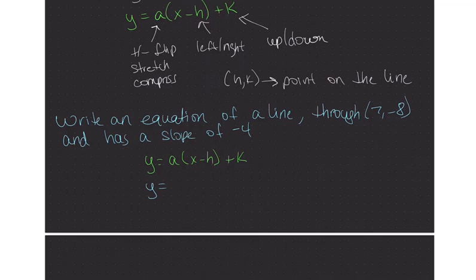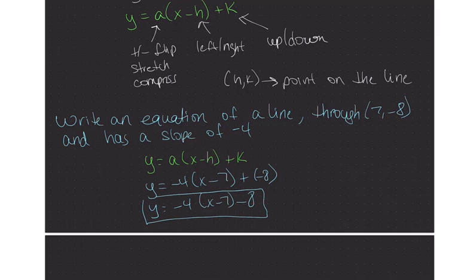So y equals, what do you think my a is going to be? Negative 4. x minus our h. What's our h? 7. Plus k. Negative 8. So just clean it up. Y equals negative 4(x minus 7) minus 8. And now you have an equation to the line.